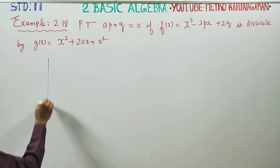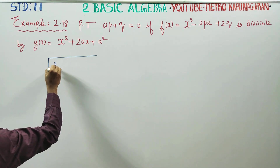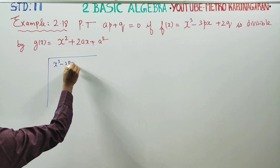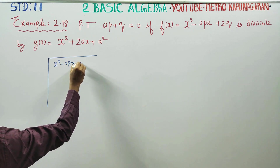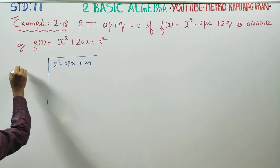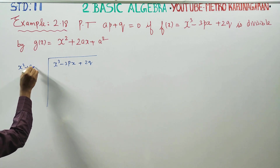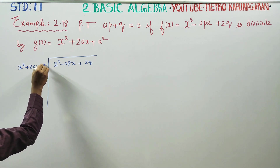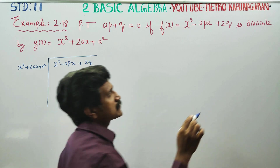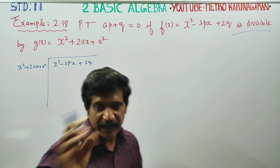F of X — the problem is X cubed minus 3PX plus 2Q is divisible by X squared plus 2AX plus A squared.